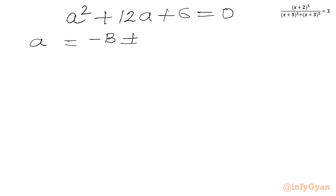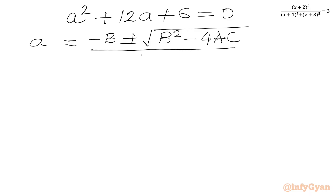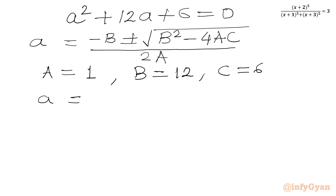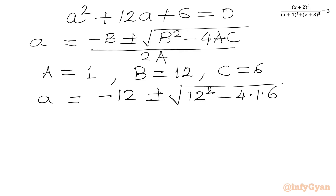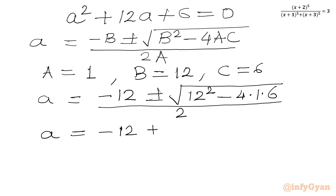Using the quadratic formula A = (-B ± √(B²-4AC)) / 2A: here capital A (coefficient of a^2) is 1, B (coefficient of a) is 12, and C (constant) is 6. So A = (-12 ± √(144 - 4×1×6)) / 2 = (-12 ± √(144 - 24)) / 2.